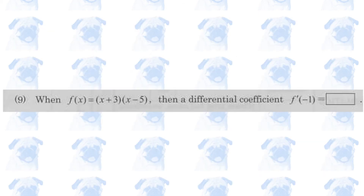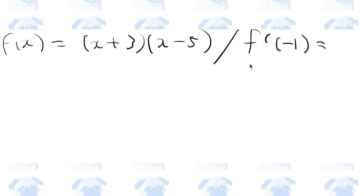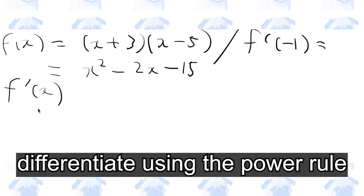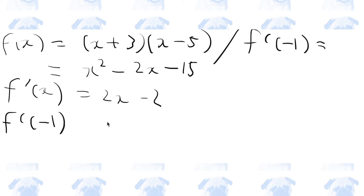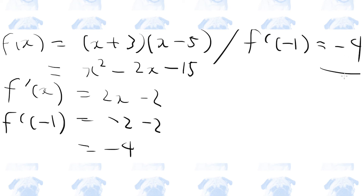Question 9. We are to find the value of f dash of minus 1. Let's expand the brackets first, then find f dash of x by differentiating f of x. Substituting x equals minus 1, the answer is minus 4.